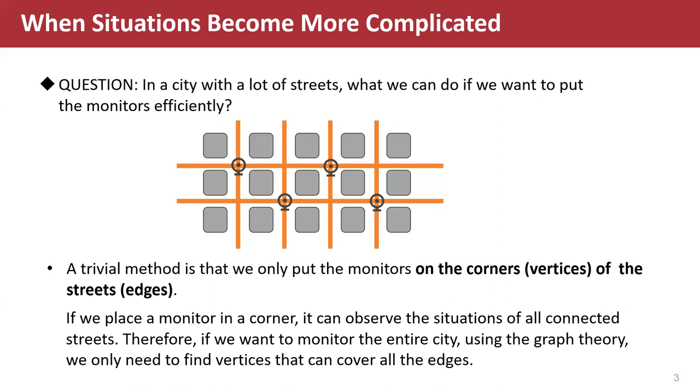If we place a monitor in a corner, it can observe the situations of all connected streets. Therefore, if we want to monitor the entire city using graph theory, we only need to find the vertices that can cover all the edges.